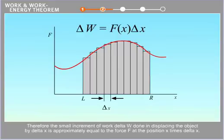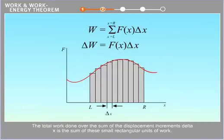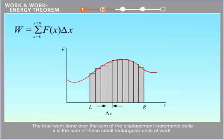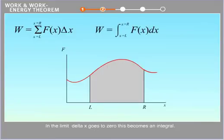We make the displacement delta x sufficiently small that the force throughout the interval is approximately constant. Therefore, the small increment of work delta w done in displacing the object by delta x is approximately equal to the force f at the position x times delta x. The total work done over the sum of the displacement increments delta x is the sum of these small rectangular units of work. In the limit delta x goes to zero, this becomes an integral.